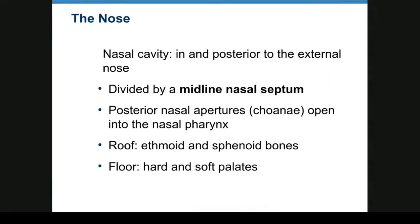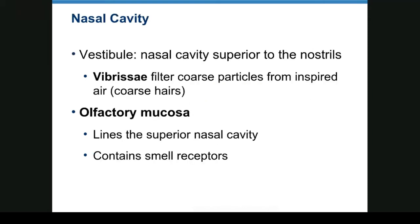The nose is divided by a midline nasal septum, and the posterior apertures open into the nasopharynx. The roof is ethmoid and sphenoid; the floor is hard and soft palates. The vestibule is the nasal cavity just superior to the nostril. Vibrissae — hairs — are there to filter inspired air. Combined with mucus, the hairs capture dust, pollen, gnats, and other particles, trapping them. They're dried out and can be digitally extracted in a process commonly known as picking boogers.